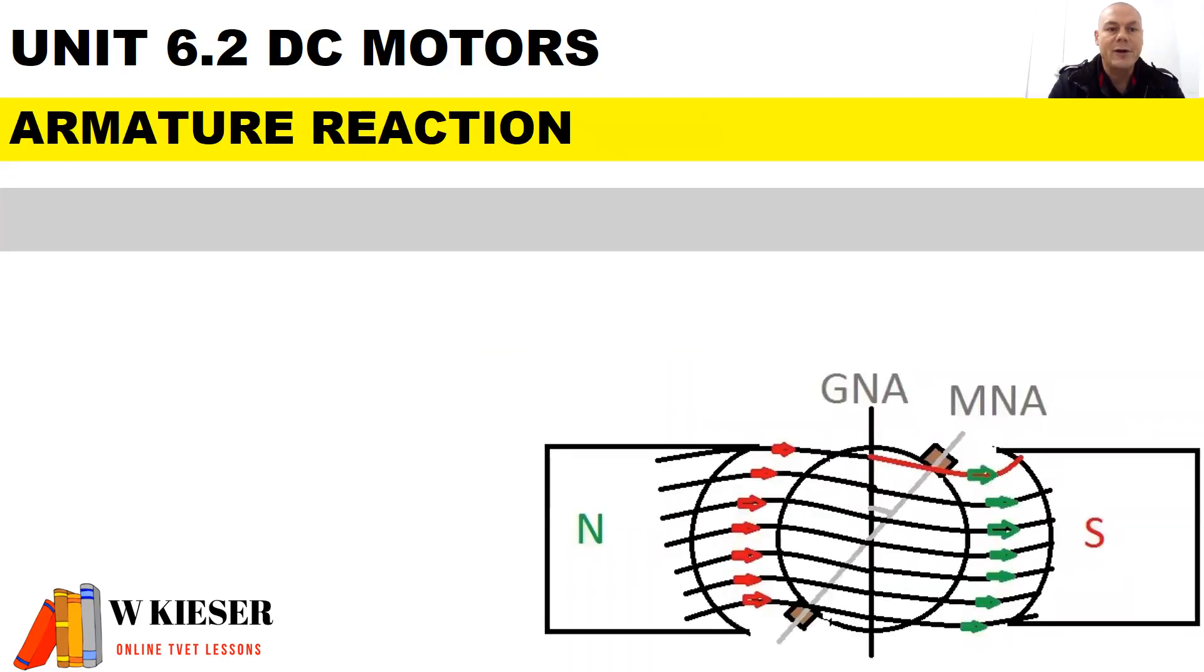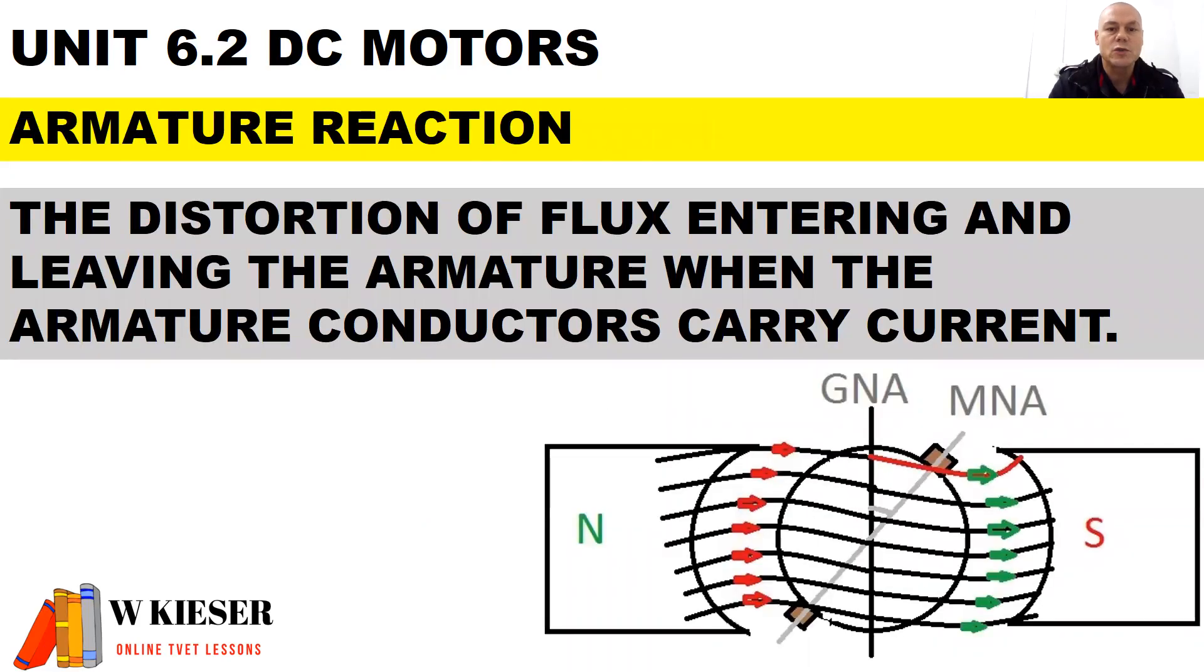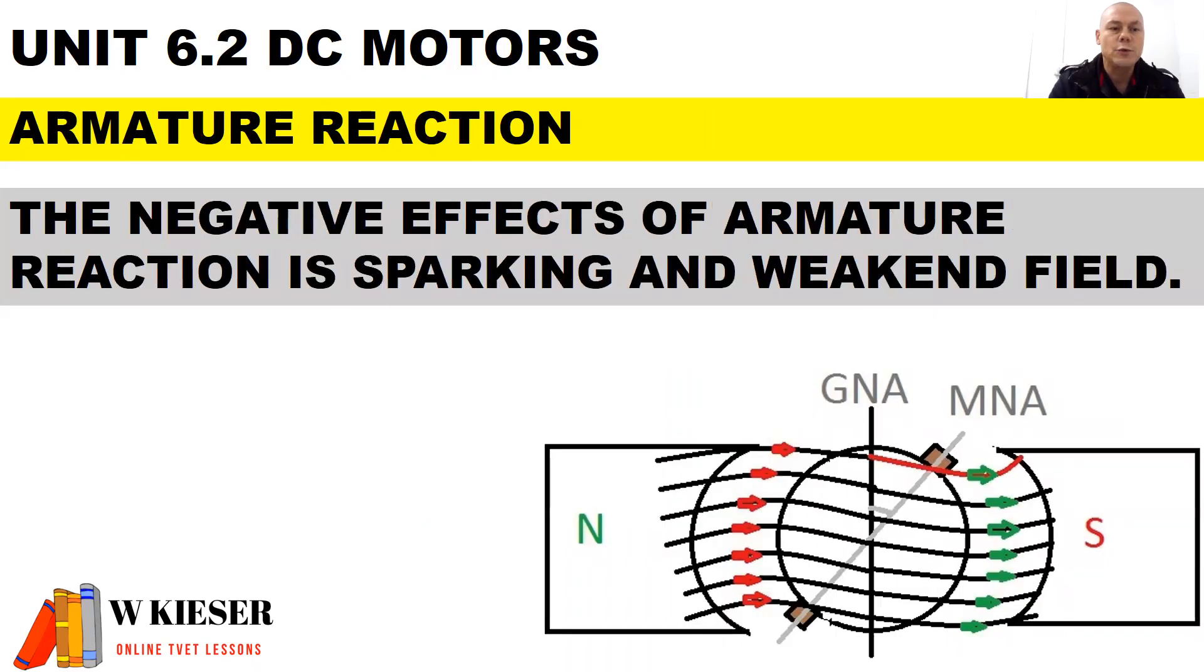Now to define armature reaction, it is the distortion of flux entering and leaving the armature when the armature conductors carry current. And there are two main negative effects of armature reaction, which is sparking and their weakened shunt field.